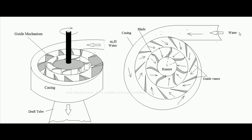Water comes from the water source — generally a dam — by the help of a penstock. At the end of the penstock there is a spiral casing, which is the first part of the Francis turbine. Water passes through the casing toward the guide mechanism, which consists of blades implanted at a particular angle to direct water toward the center of the machine.